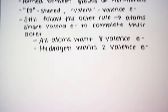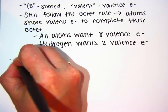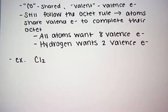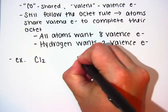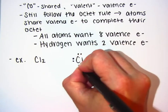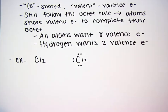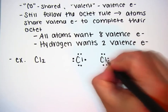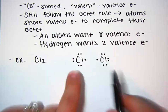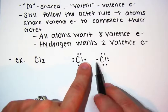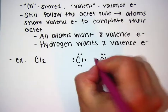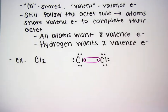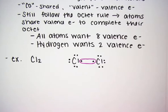How does sharing valence electrons allow atoms to complete their octet? Let's look at diatomic chlorine. Chlorine is in group seven, so chlorine has seven valence electrons. It's going to find another chlorine to bond with that also has seven valence electrons. Unpaired electrons can be shared to form a bond.